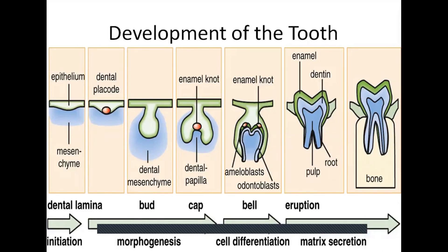The proliferation stage is also known as the cap stage. In this stage, the peripheral cells of the cap form the inner and the outer enamel epithelium. Failure in proliferation results in congenitally missing teeth. Excessive proliferation results in a cyst, an odontoma, or even a supernumerary tooth, depending upon the amount of cell differentiation.